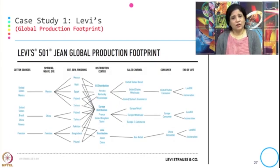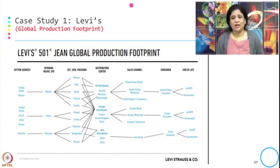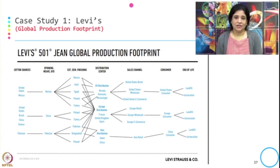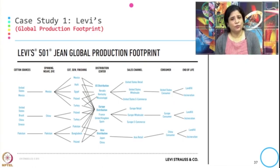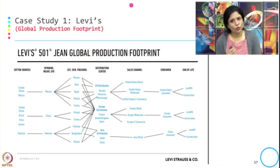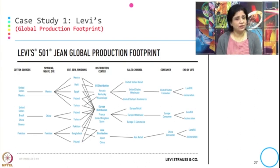If you look at the production footprint of Levi's, the slide shows the locations where each of these activities are taking place — you can see how globally they have spread their production. If they have spread their production globally, obviously the impact is also going to be spread over all the areas where they have their production facilities.